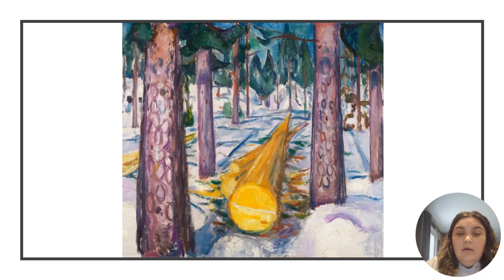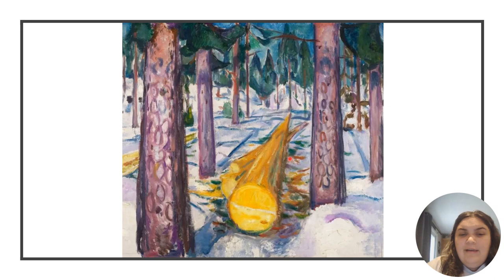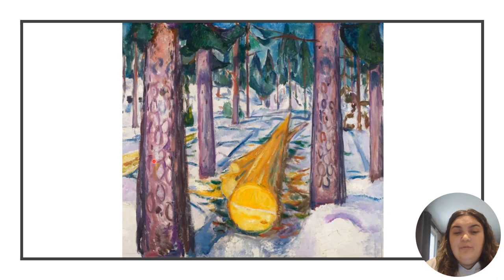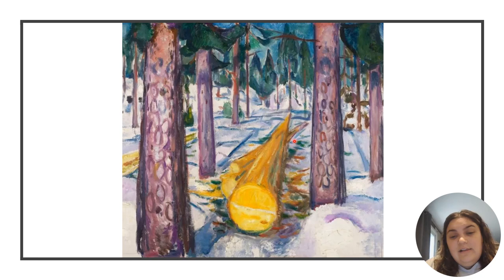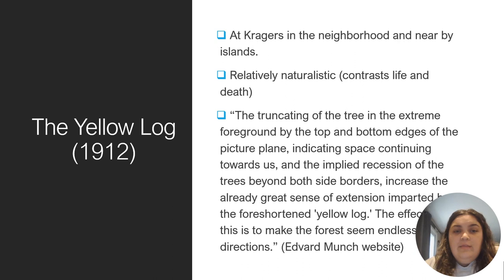This next picture is called the Yellow Log. As we can see, we're in a forest with lots of trees. It looks like some trees have been cut down. The trees appear darker — death-looking. It looks like the forest goes on and on with no stopping at all. We see that one tree is lying down, and he makes little marks on the side showing it's laying in the snow. This picture, the Yellow Log, was made in 1912.